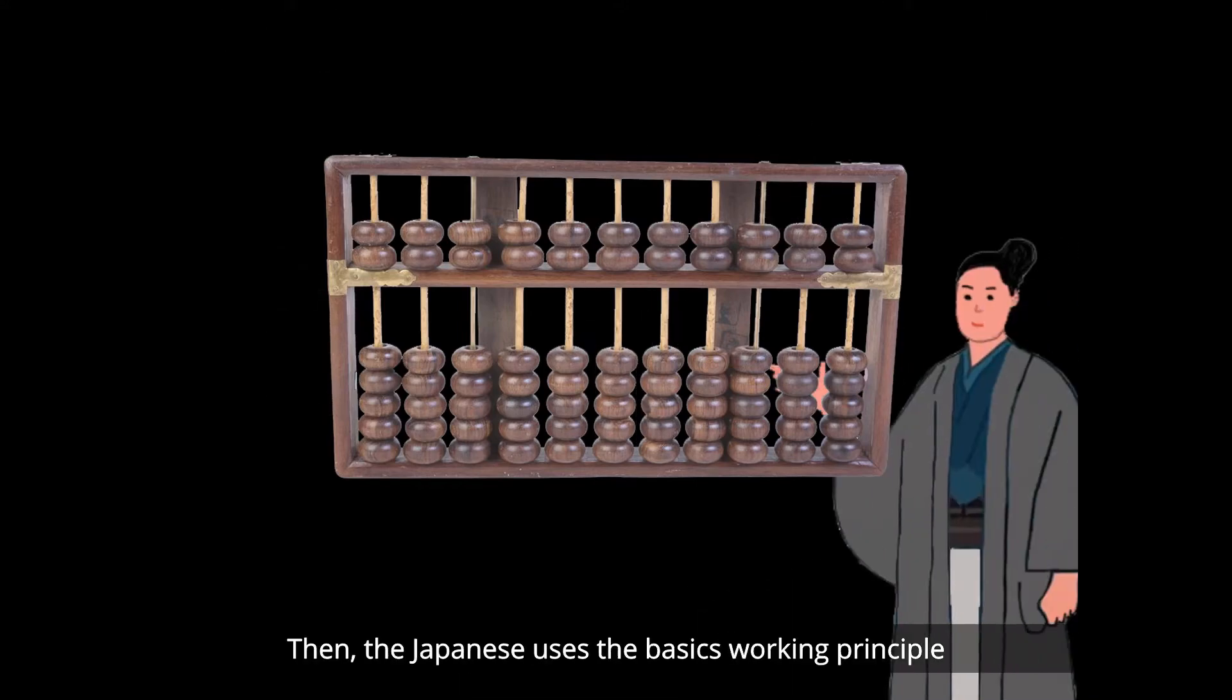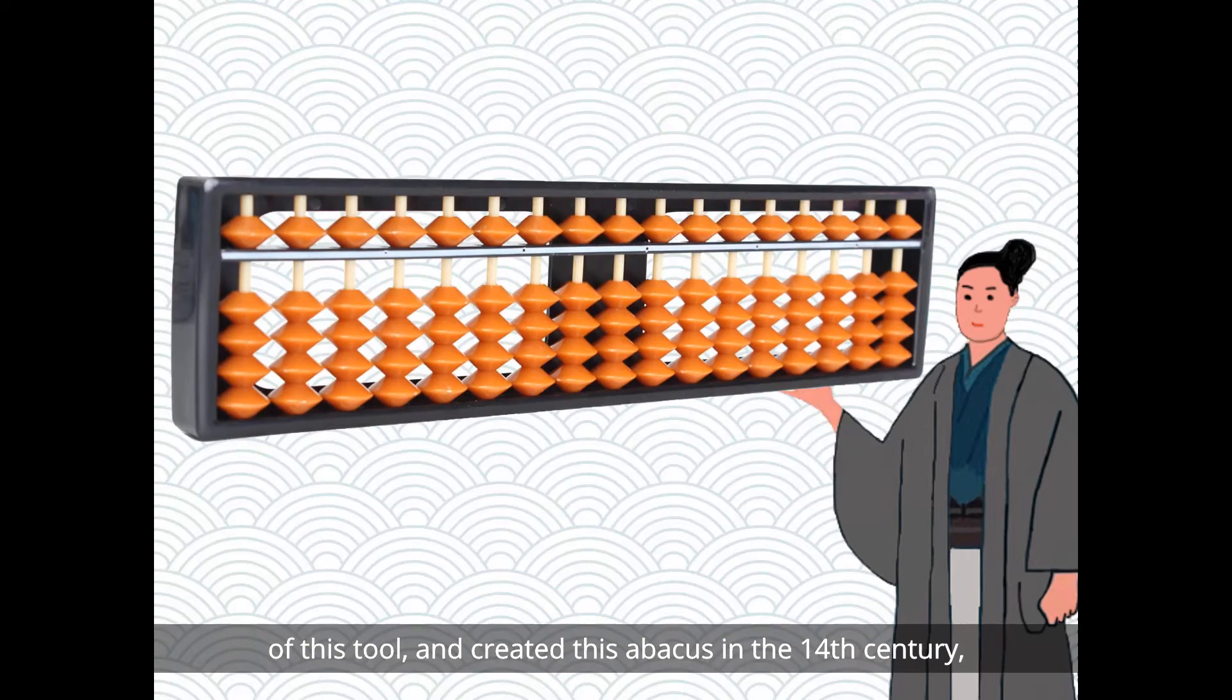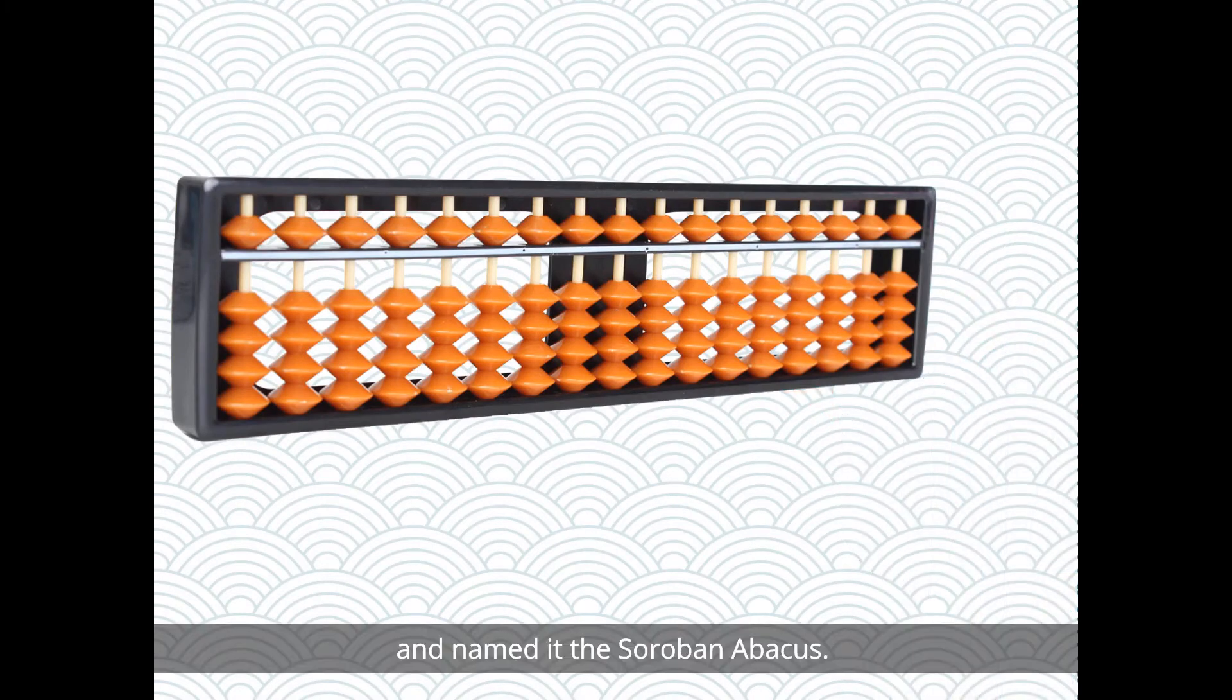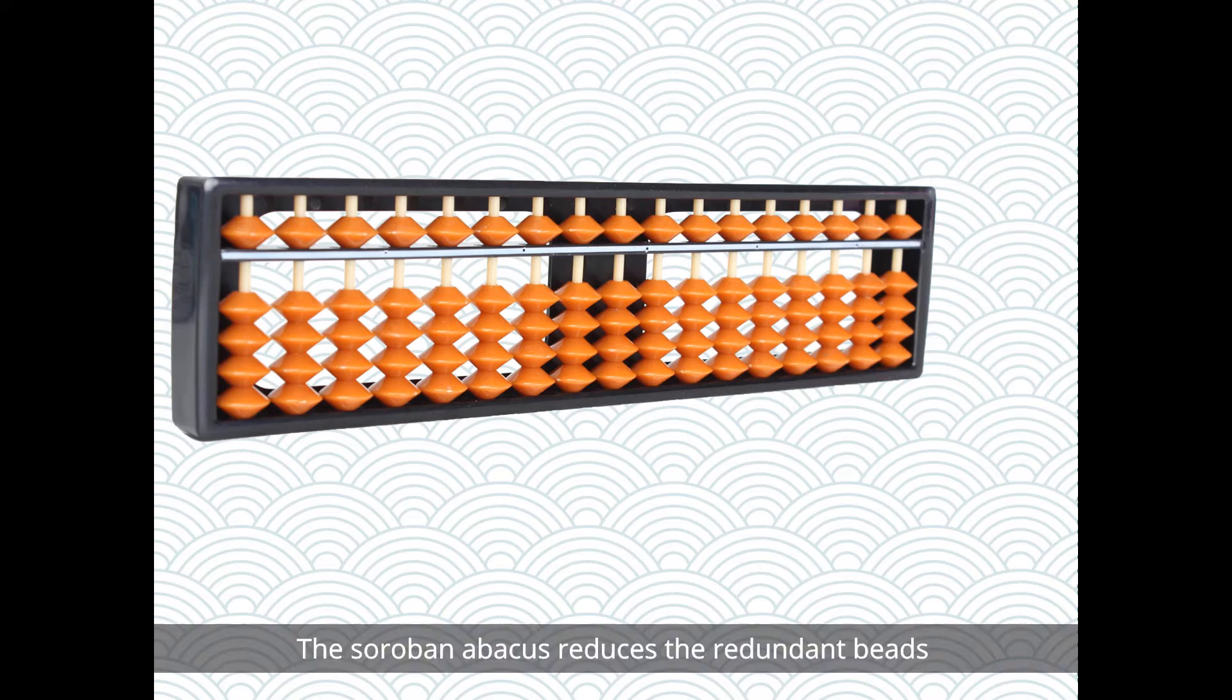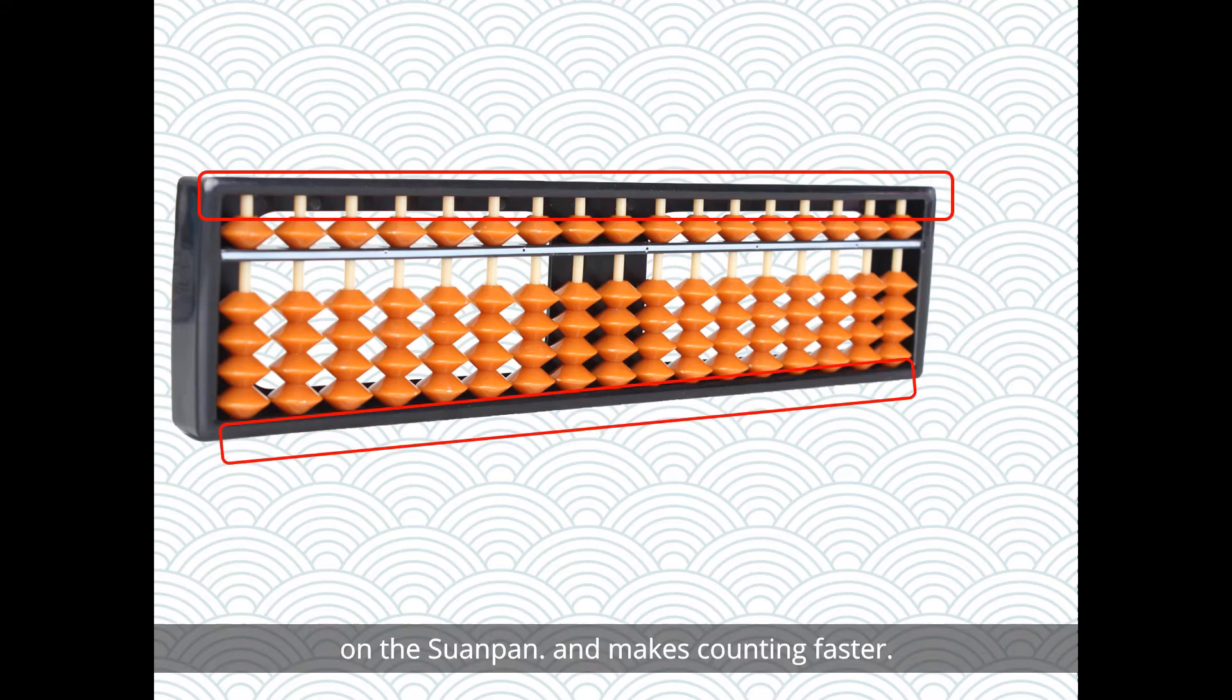Then the Japanese uses the basic working principle of this tool and created this abacus in the 14th century and named it the Saroban abacus. The Saroban abacus reduces the redundant beads on the Suanpan and makes counting faster.